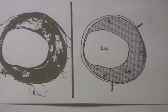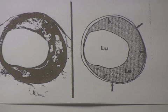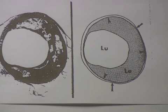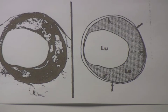This is a startling revelation. This explains why people can have a nuclear stress test one week and be told that it is completely normal, and then the next day they can die from a ruptured plaque.